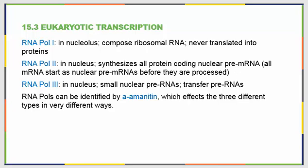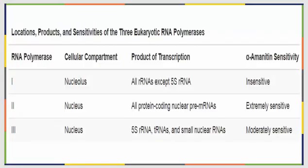We can identify RNA polymerases by a toxin that comes from mushrooms. This toxin affects the different polymerases in different ways, so when we find a new gene, we can expose that section to this toxin, see how the effects are weighed, and then identify it. The location, products, and sensitivities of the three different RNA polymerases are shown in a table from your book — helpful to write out a couple of times to commit to memory.